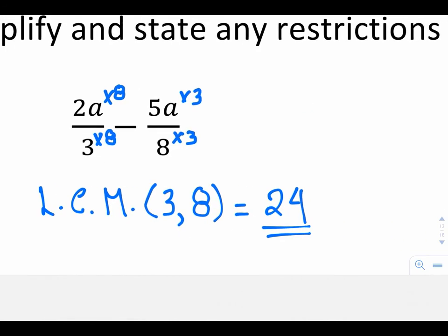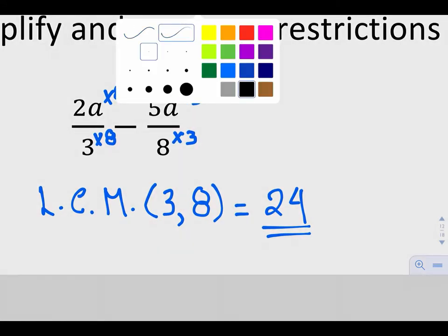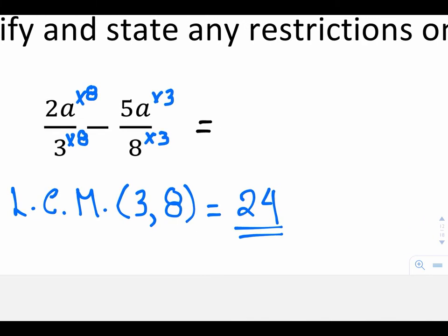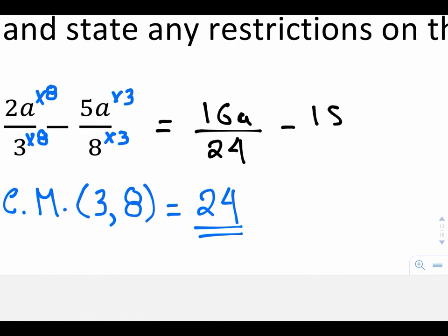So what do I get now? My new fraction is going to look something like, or my new set of fractions is going to look something like this. I'll have 16a on the top all over 24 minus 5 times 3 is 15a all over 24.